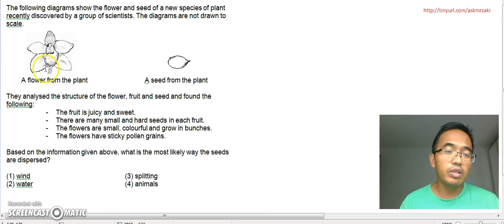So basically it's a flower and a seed. The diagrams are not drawn to scale. So that means this seed could be far smaller and this flower could be much bigger. These two are not the actual sizes.